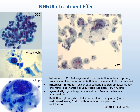BCG, mitomycin, and thiotepa may be intravesically administered. They cause inflammatory response, producing sloughing and degeneration of both benign and neoplastic epithelium. Mitomycin and thiotepa can cause nuclear enlargement, hyperchromasia, smudgy chromatin, and degenerated or vacuolated cytoplasm. Most have low NC ratio, but when they have high NC ratio, they closely mimic high-grade urothelial cells. Systemically administered drugs such as cyclophosphamide and busulfan may also cause marked cellular abnormalities. Radiation effects are characterized by cytomegaly with nuclear enlargement, multinucleation, and abundant vacuolated cytoplasm, maintaining low NC ratio.